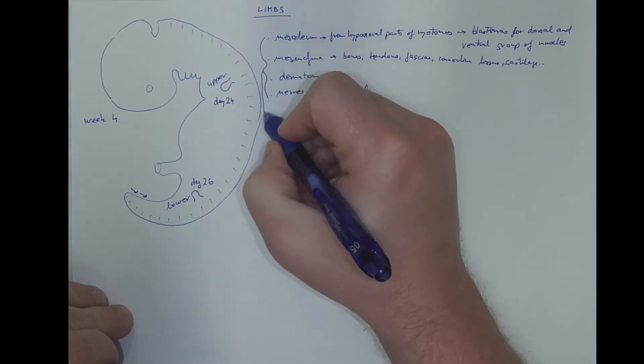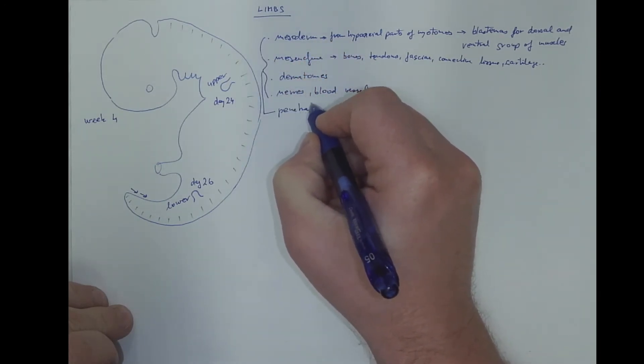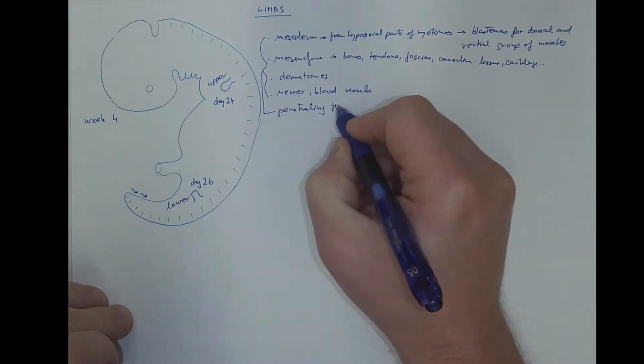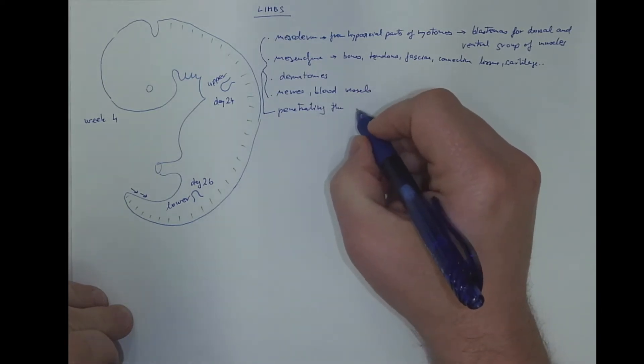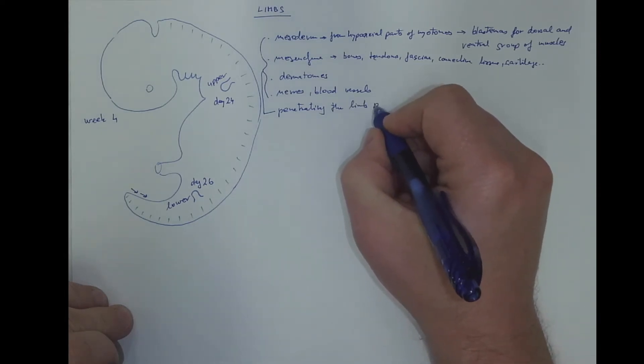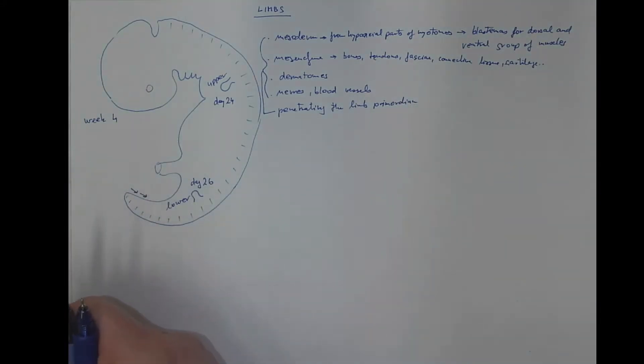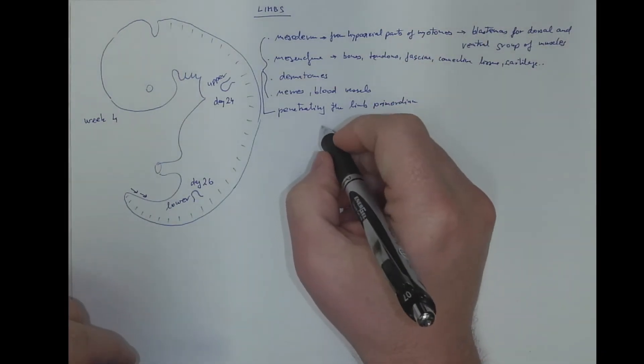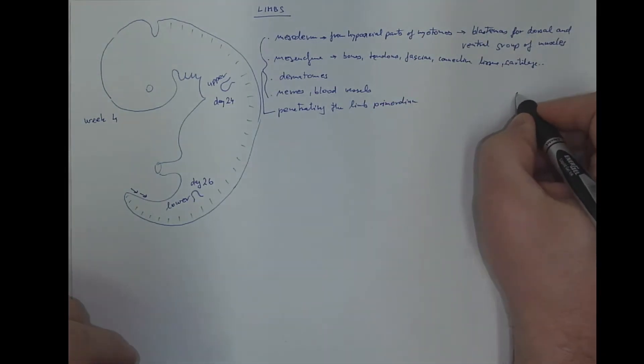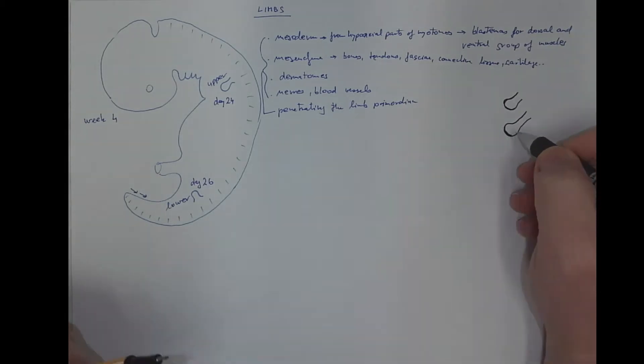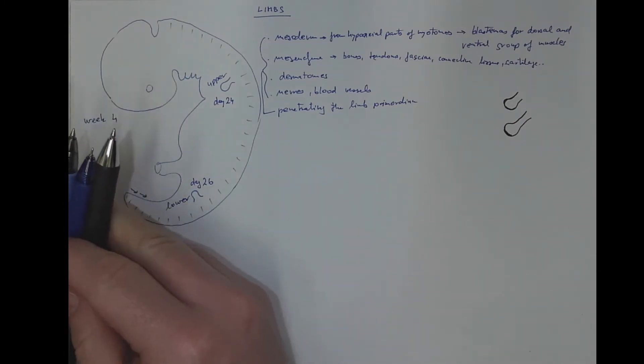All these structures are penetrating the limb primordium. At first, the limb primordium has a shape of a simple bud, and then it resembles a fin. On the most distal part of the fin, there is a structure called apical ectodermal ridge.